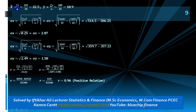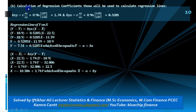Mean of x is 22.5, mean of y is 22.9, standard deviation of x is 2.87, standard deviation of y is 1.58. Putting all these values into the formula, correlation = 0.96, which indicates a positive relation.